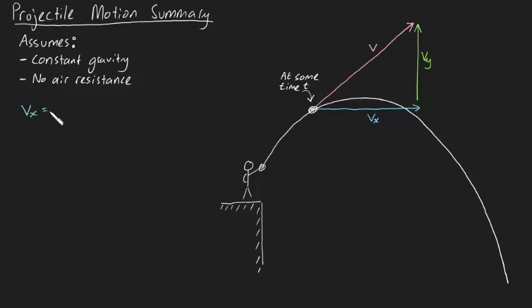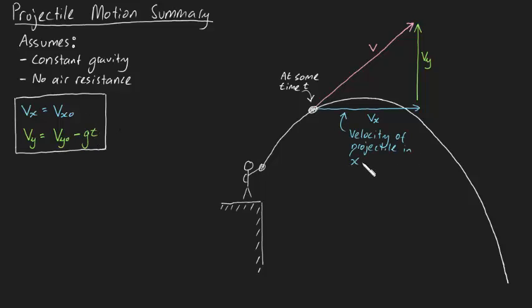vx is equal to vx0 and vy is equal to vy0 minus gt, where vx is the velocity of the projectile in the x direction in meters per second and vy is the velocity of the projectile in the y direction in meters per second.